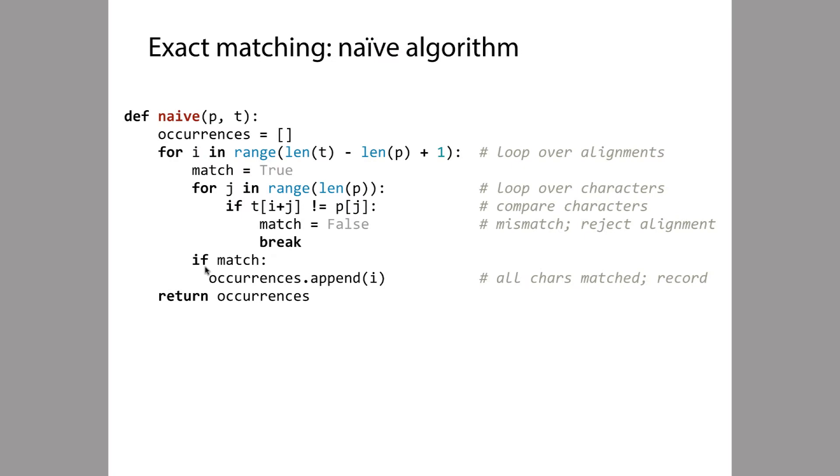And that brings us here. Only if we make it through all the iterations of the inner loop without ever setting the match variable to false, in other words, only if all the character comparisons were matches, do we go ahead and append this offset to the list of occurrences. And then at the end of the day, we return the occurrences list.